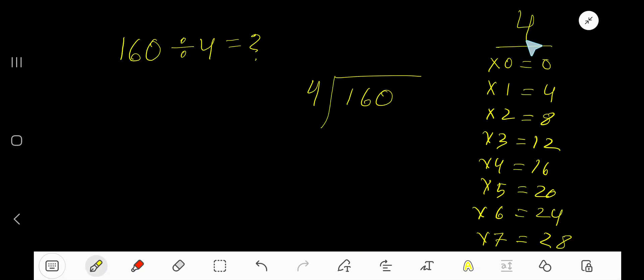160 divided by 4. Here 4 is a divisor, so we need the multiplication table of 4. 4 times 0 is 0, 4 times 1 is 4, 4 times 2 is 8, 4 times 3 is 12, 4 times 4 is 16.